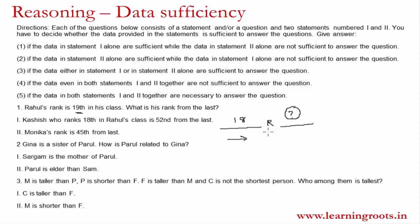Statement 1 says that Kashish, who ranks 18th in Rahul's class, is 52nd from the last. If Kashish ranks 18th, there are 17 people ahead of Kashish and 51 people behind Kashish. So the total number of students is 17 + 1 + 51 = 69. We now know the total number of students, which was exactly what we needed. Therefore, statement 1 alone is sufficient.